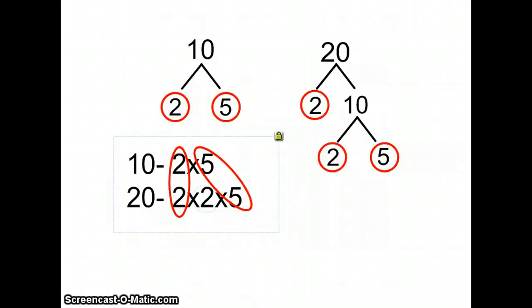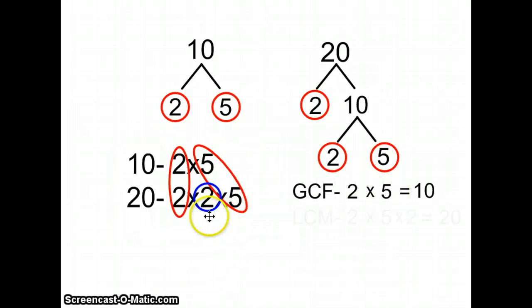So if I look, this two is all by itself. In greatest common factor, I only wrote two times five. But for least common multiple, I'm going to use the two one time right here. I'm going to use the pair of fives right here just like I did. And here is the one extra step that two or whatever numbers are left over, you also use them in your product of prime factors.